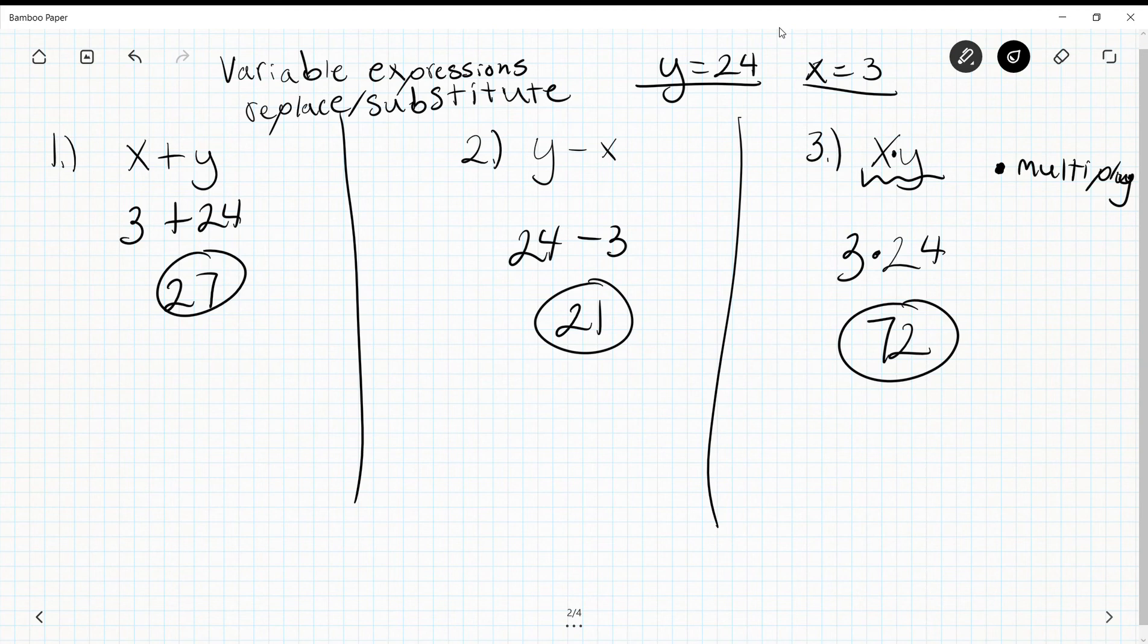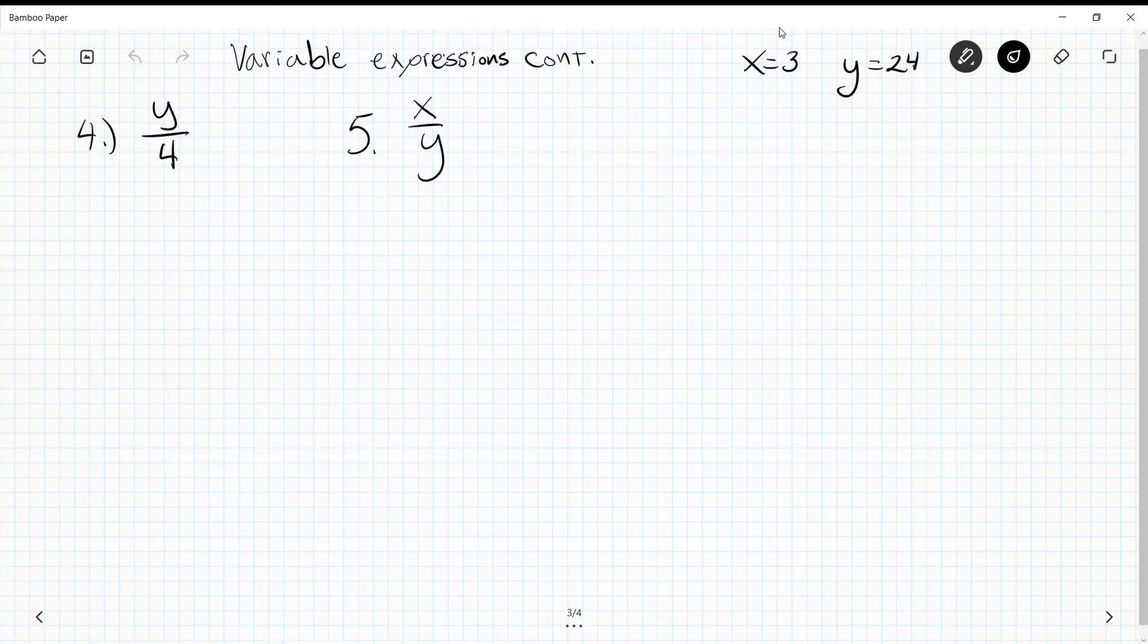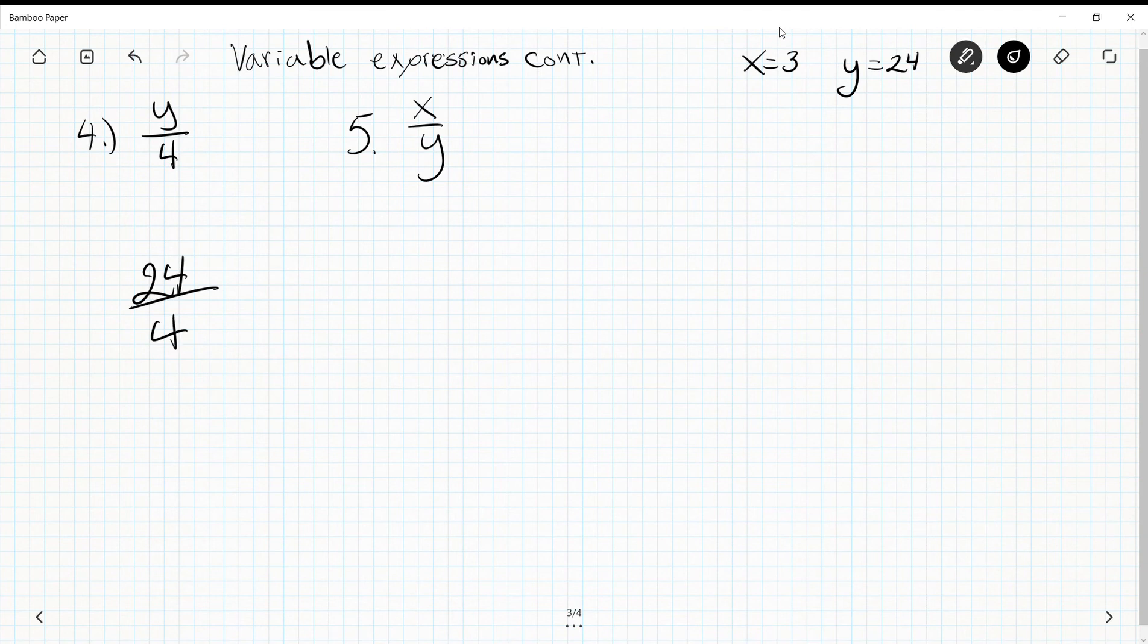Let's look ahead a bit. So I have variable expressions continued. I've got my piece here, 4y over 4, so 24 over 4. So 24 divided by 4 is 6.